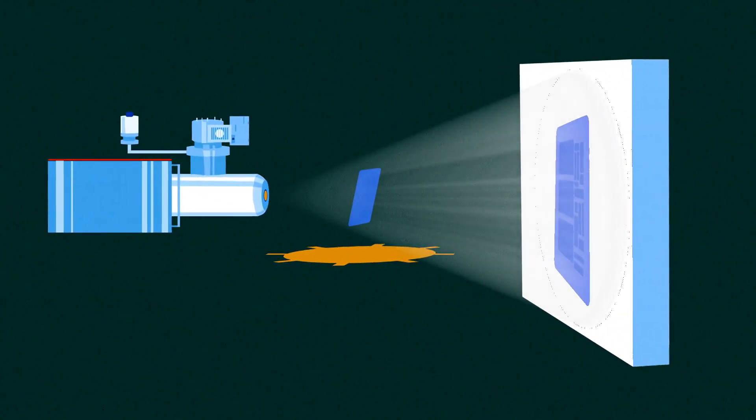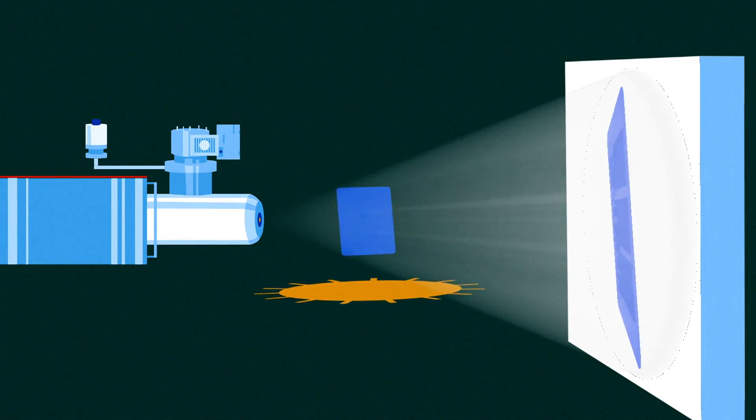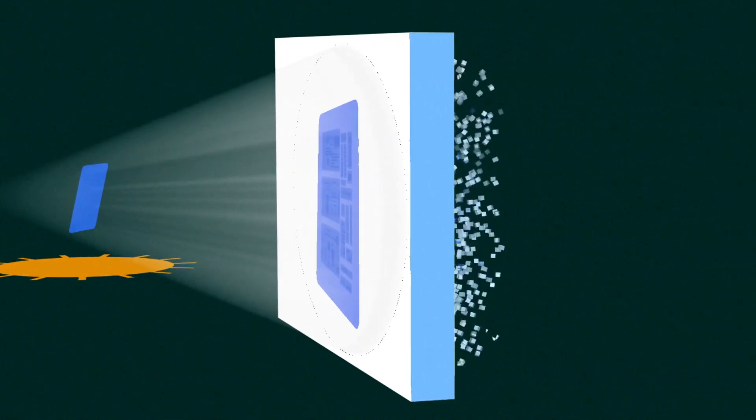Microcomputed tomography extends the resolution of CT into the submicron scale by using X-ray sources with finer focuses, object stages with higher precision, and detectors with smaller pixels.